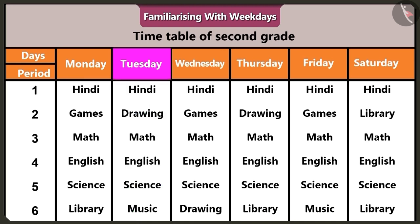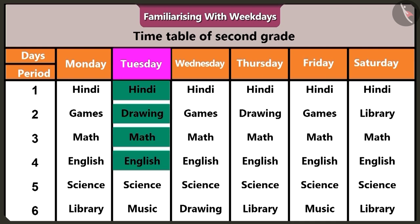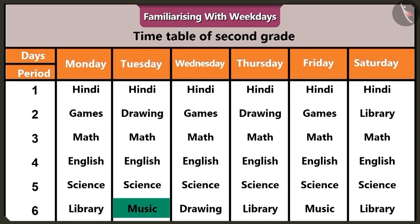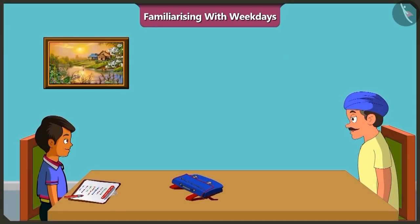In this timetable, the days from Monday to Saturday are written. Tomorrow is Tuesday, so we have to look at the subjects written in Tuesday's column. Here are the subjects: Hindi, Drawing, Mathematics, English, Science, and Music are mentioned in Tuesday's column. You are right. Now I will remember this — in order to read the timetable, I will have to keep in mind the days of the week. Thank you, Uncle, for teaching me so much.